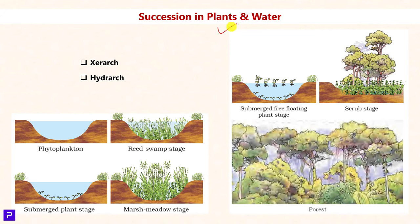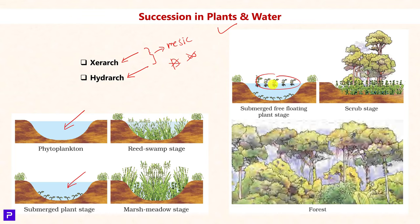Succession in plants and water: succession that begins in dry conditions is called xerarch, and succession under wet conditions is called hydarch. Irrespective of starting conditions, both lead to an intermediate state called mesic — where conditions are neither dry nor wet. For example, in succession in water, pioneer species are phytoplankton, followed by free-floating algae; this community is replaced by a swamp, which accumulates sediments and organic matter to reach a mesic state, and finally a climax community which is a forest. So the climax community is always a forest, regardless of whether succession began under dry or wet conditions.